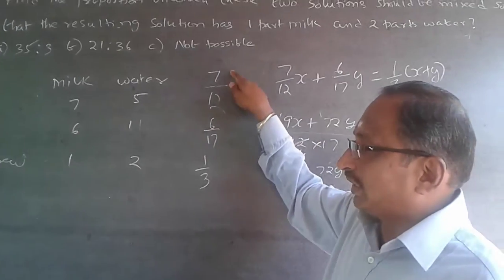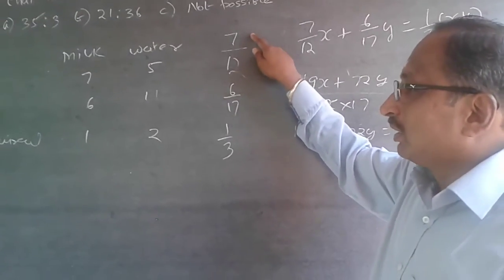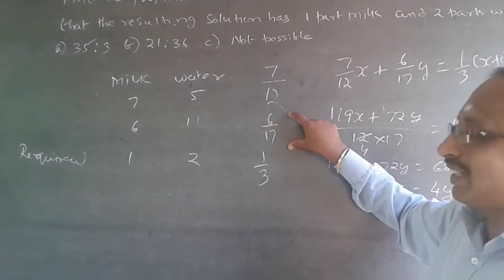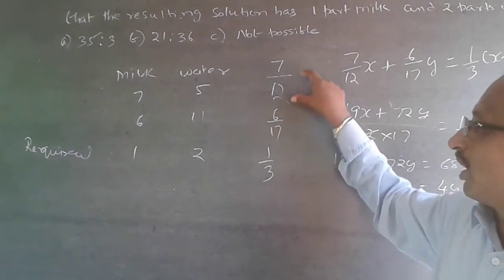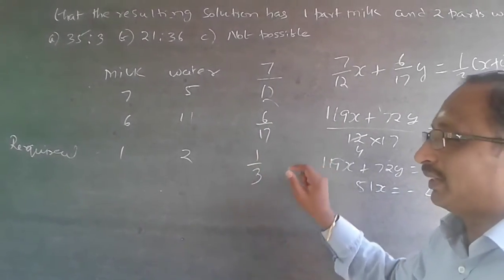So 7 by 12 is more than 1 by 3. Similarly, 6 by 17 is also more than 1 by 3.